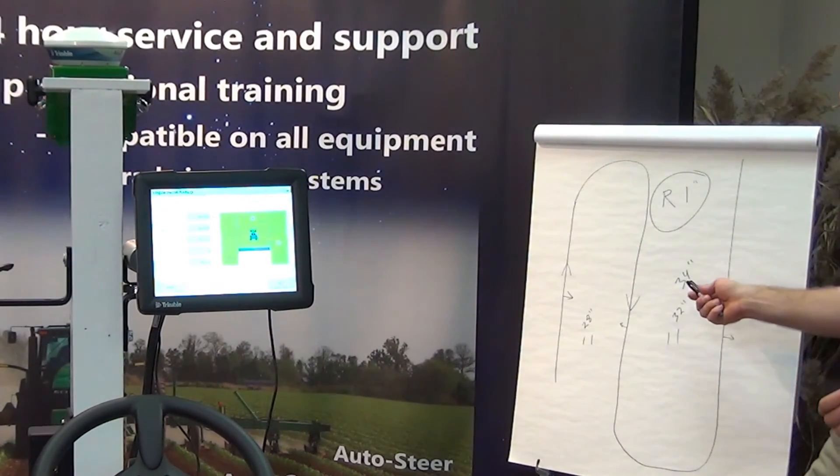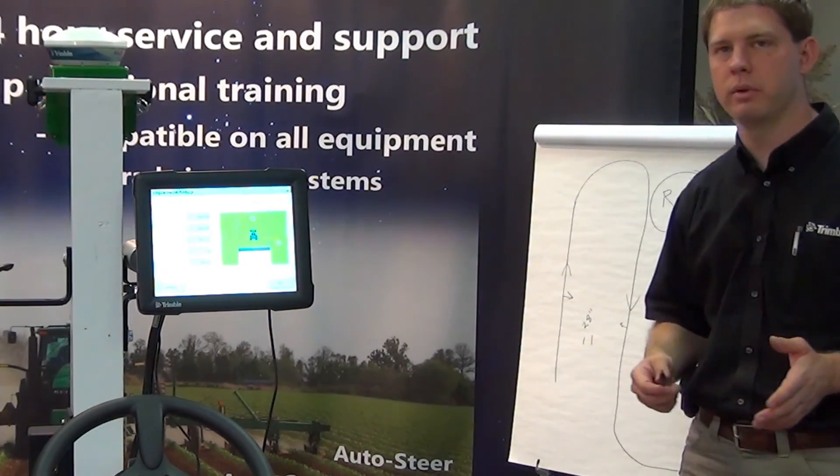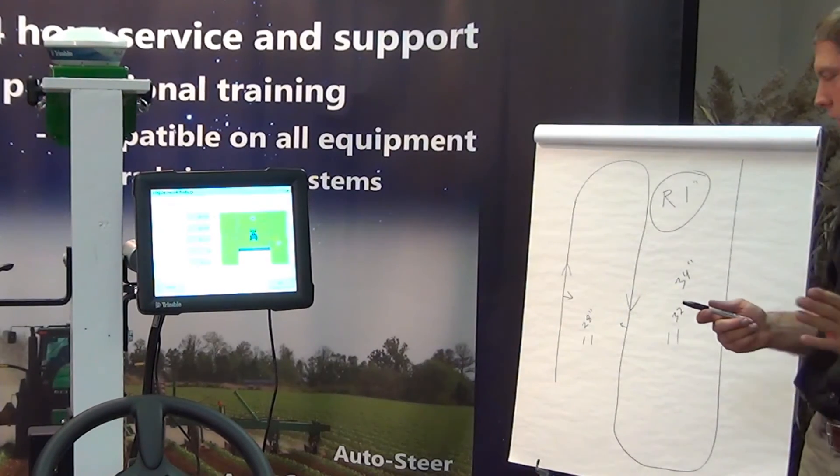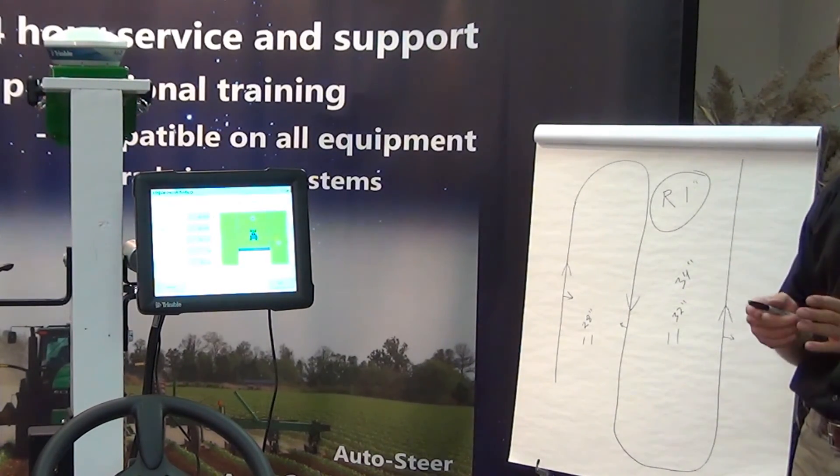In this case we would have to go to the drawing board, figure out what our planter width should actually be, and then we figure out what our offset is.